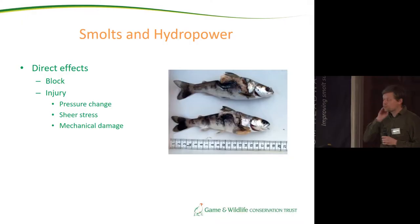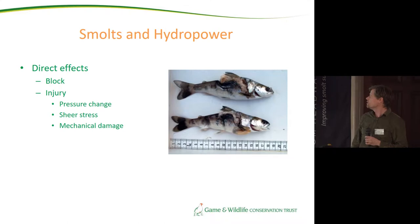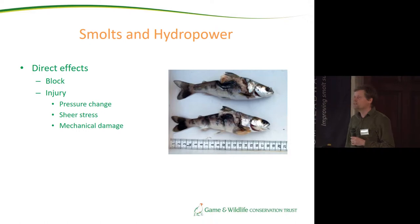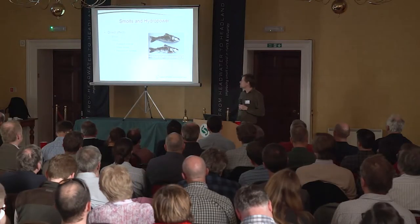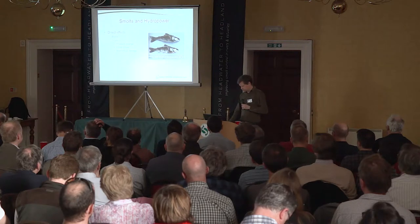If we focus on smolts, there are classic reported effects — direct effects such as the migration path being blocked, or fish having to go through the turbine. Direct effects can be injury, caused by pressure changes, changes in shear stress, or pure mechanical damage, as shown in these two smolts here, depending on the type of turbine.